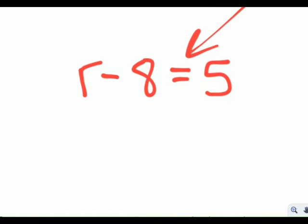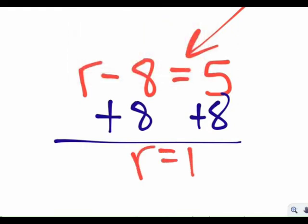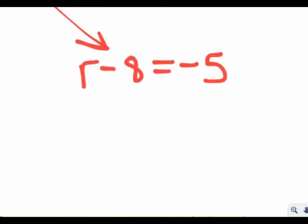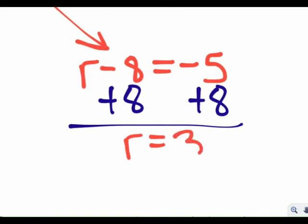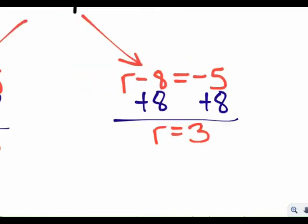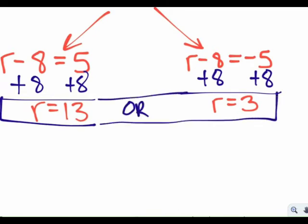Now we have two separate equations to solve. Let's solve the left one first: add 8 to both sides, so R equals 13. Now the right-hand side: add 8 to both sides, so R equals negative 5 plus 8, which is 3. Like before, we have two solutions to this absolute value equation, which will ordinarily be the case.